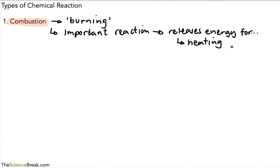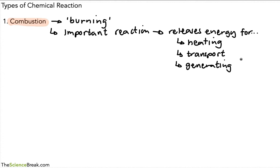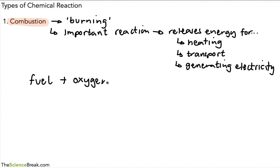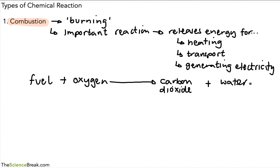The first use of that energy is for heating your home, which is very likely to be heated by a combustion reaction. It's also used for transport — things like petrol and diesel use combustion reactions in engines. A major use is generating electricity: we burn fossil fuels through a combustion reaction to generate electricity. We can write a general equation for combustion: fuel plus oxygen gives carbon dioxide and water.